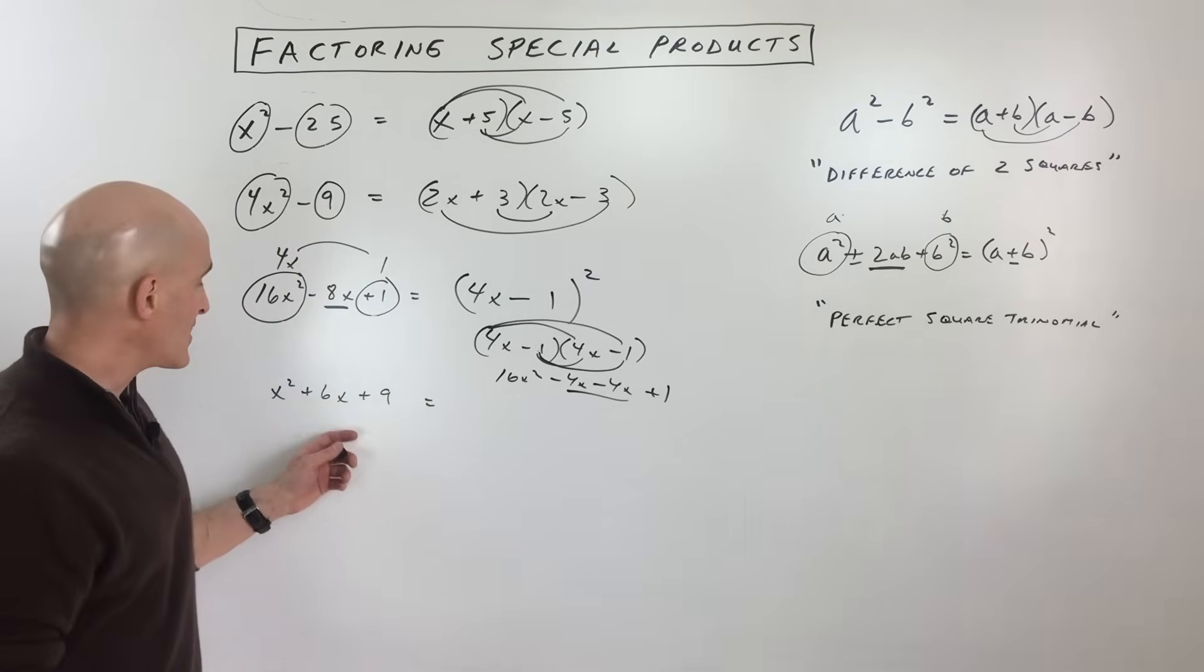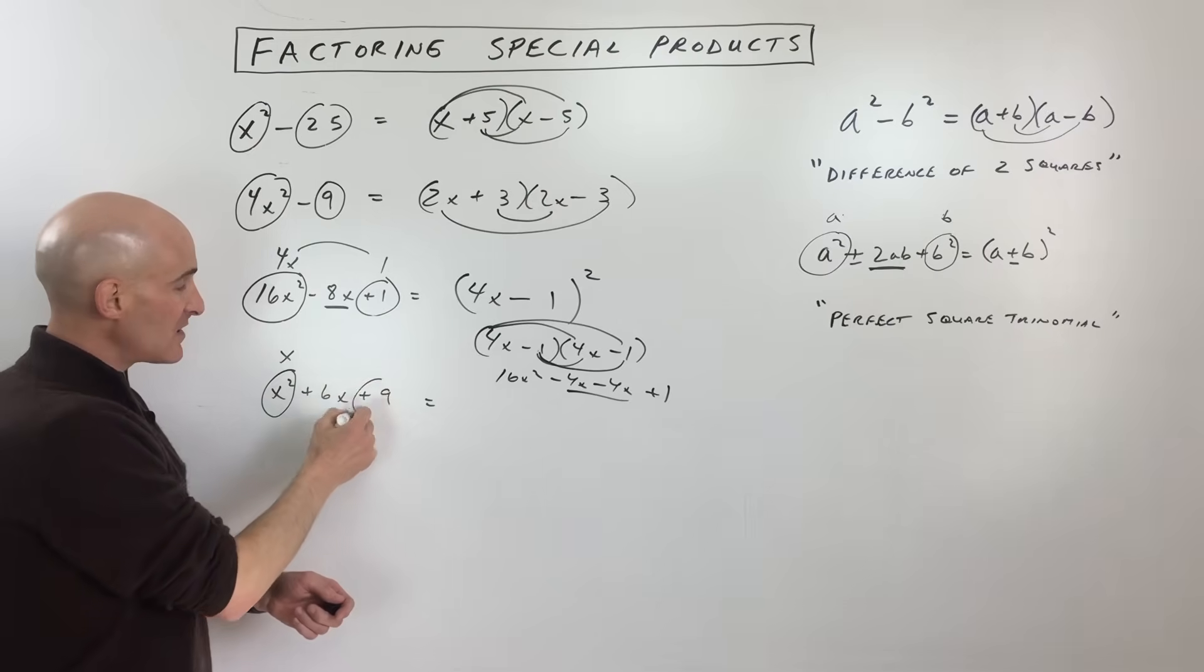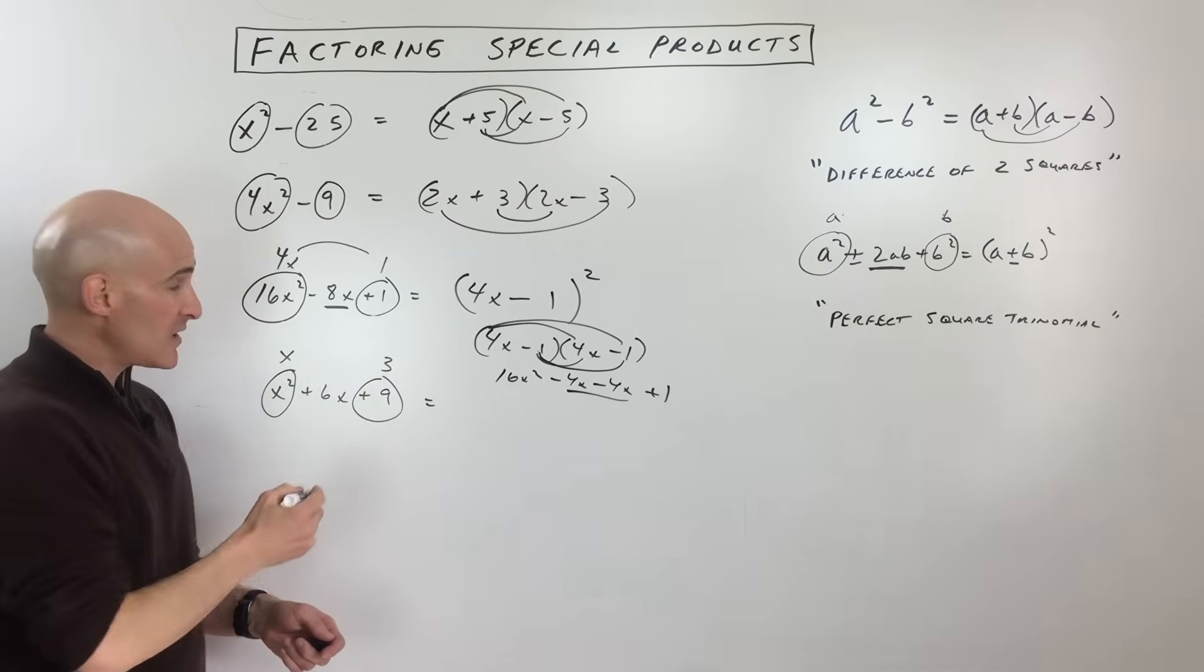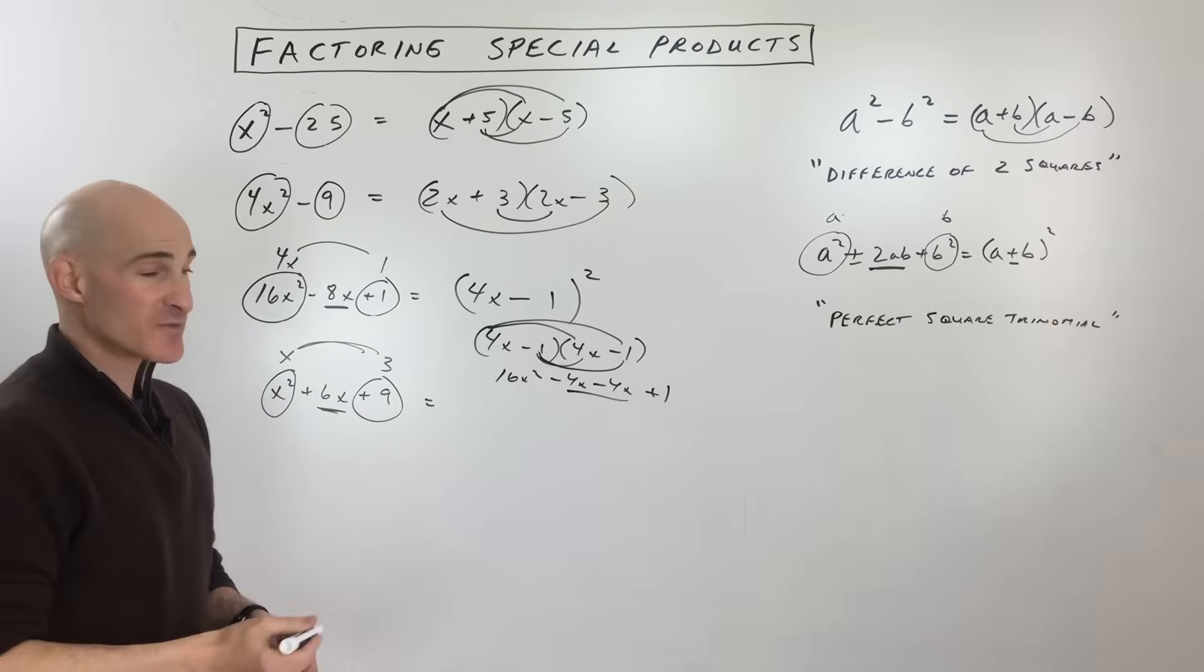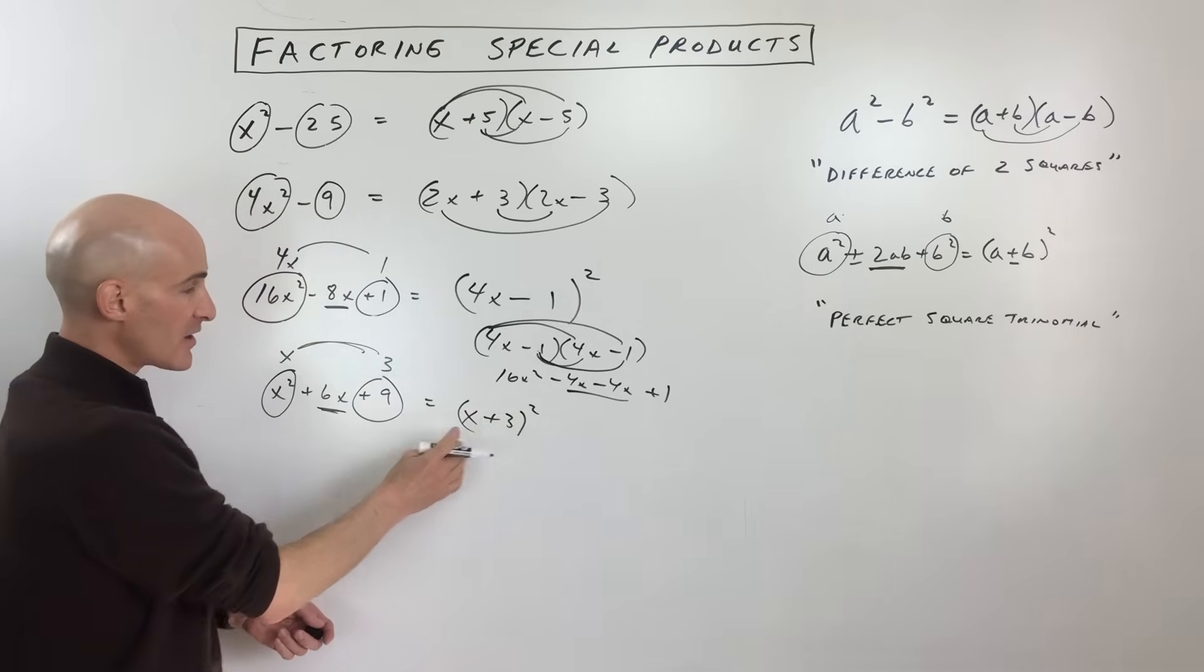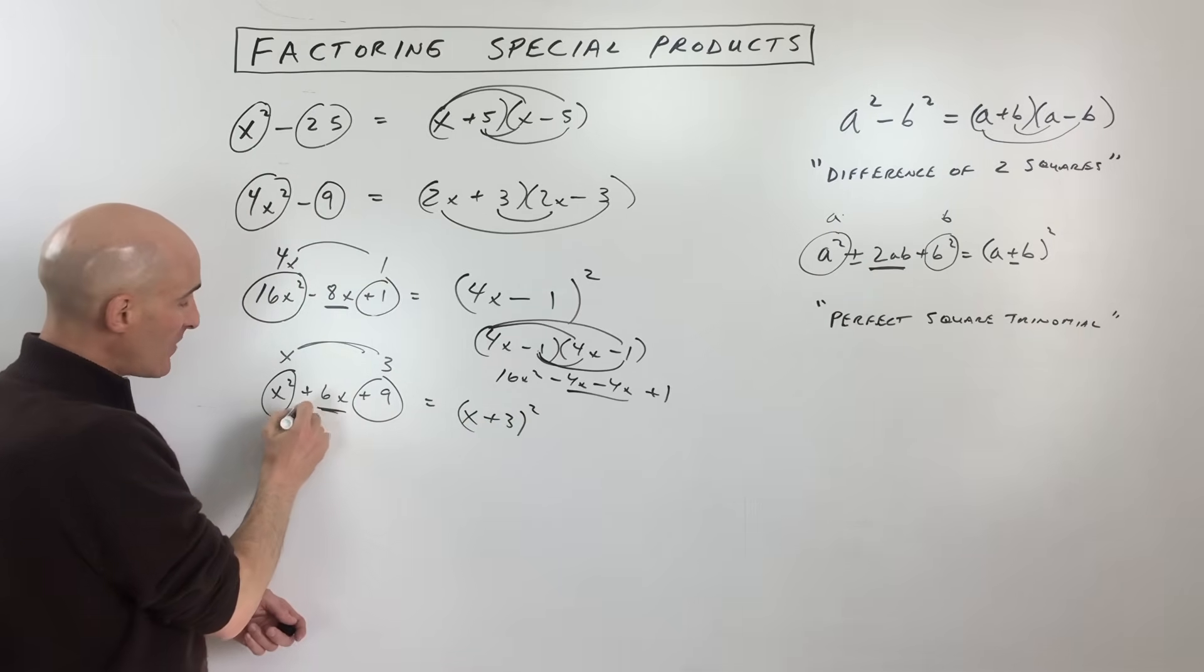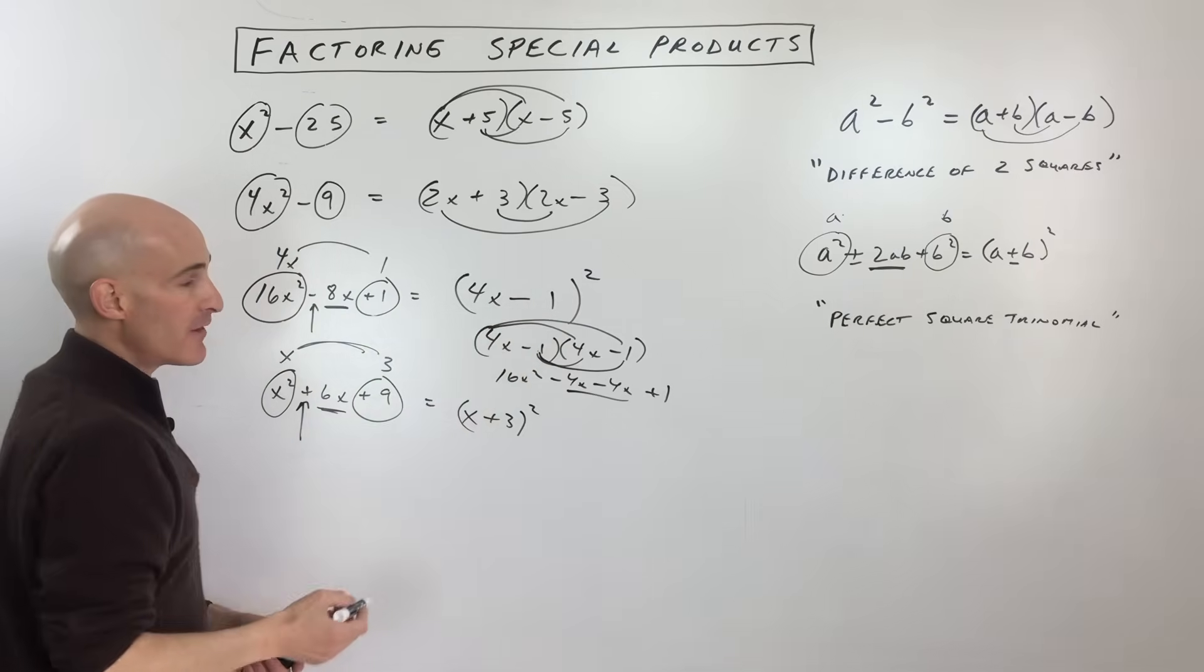Now let's look at this last example. Notice that x² is a perfect square, 9 is a perfect square (3 times 3), and 3 times x doubled is our middle term 6x. So when we factor this, it's (x + 3)². Notice we're using plus here because the middle term was positive. In the previous example it was minus because the middle term was negative.